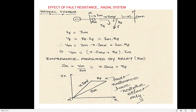X·ZMN is the fraction of impedance up to the fault point F with fault resistance RF. The default current flows, and (1−X)·ZMN is the remaining impedance from the fault point to bus N. RM is the relay at bus M. The current measured by relay RM is IM, and IM equals IF.